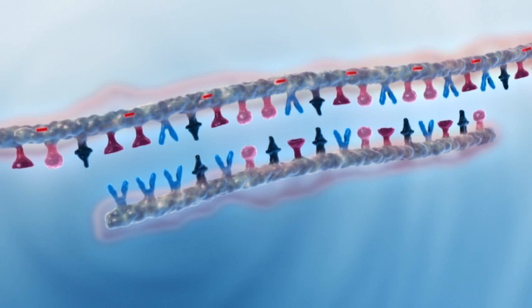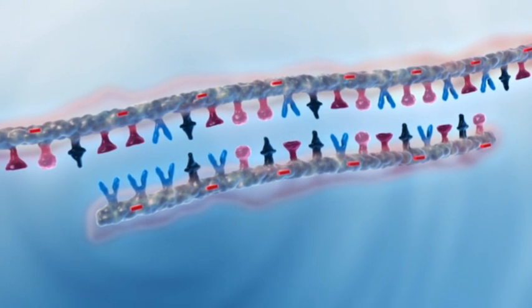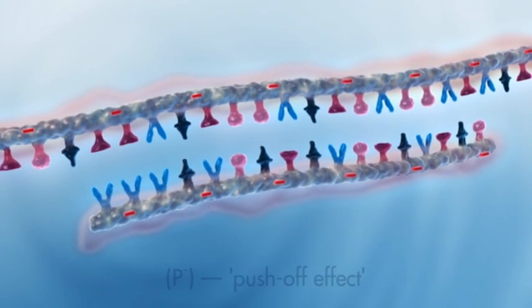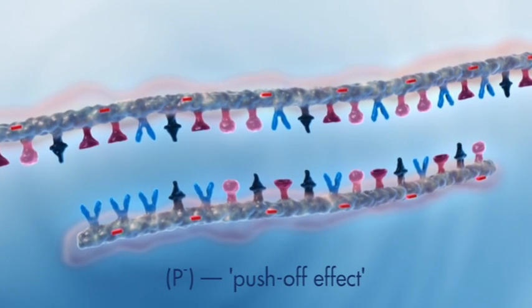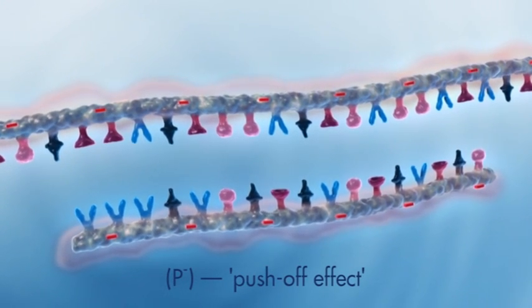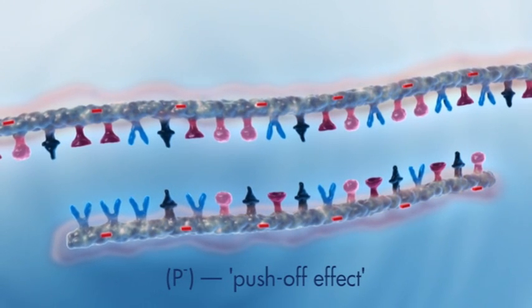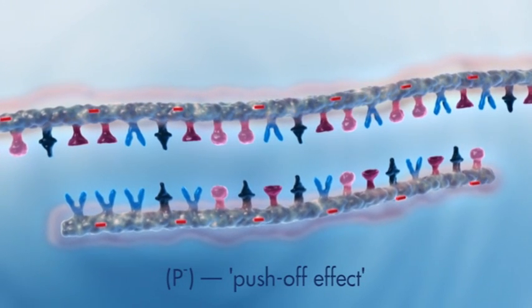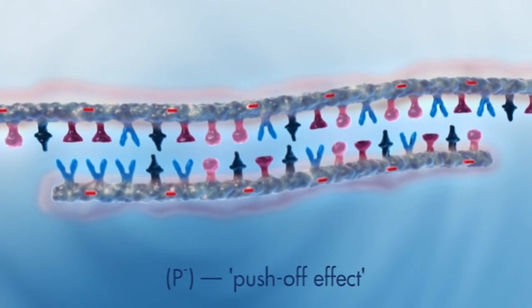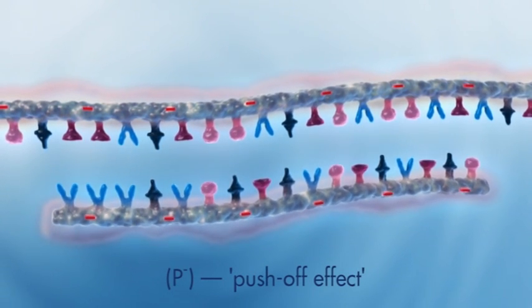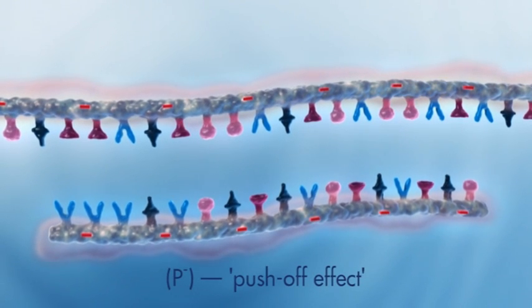How does DNA behave in solution without the influence of ions? The DNA template and primer molecule, indicated here with a minus sign, are negatively charged and therefore show less tendency to anneal to each other due to electro-repulsive forces. A push-off effect between the DNA template and primer molecule is the result.